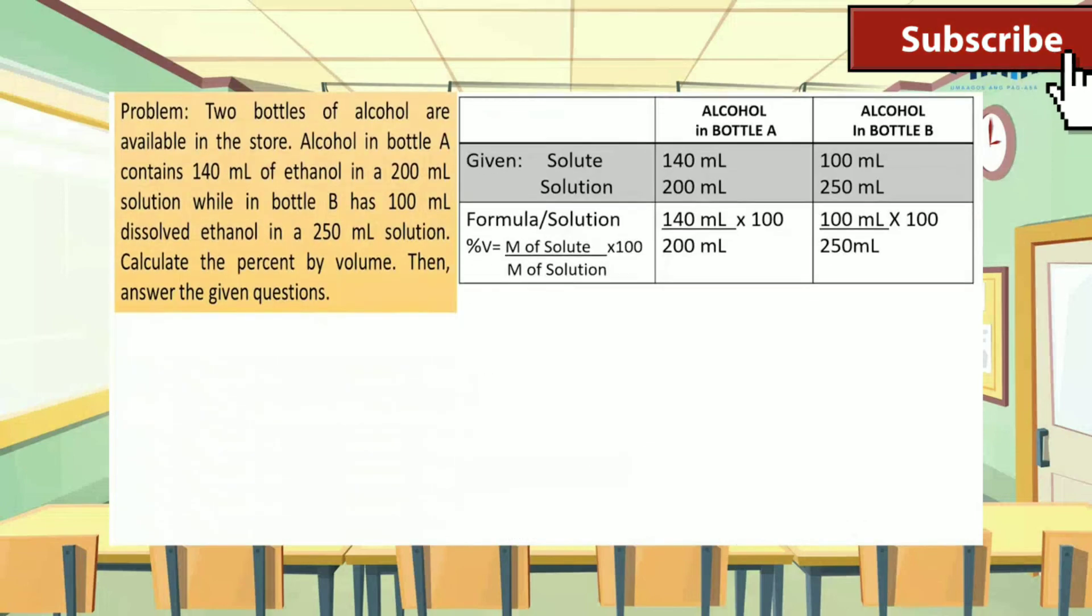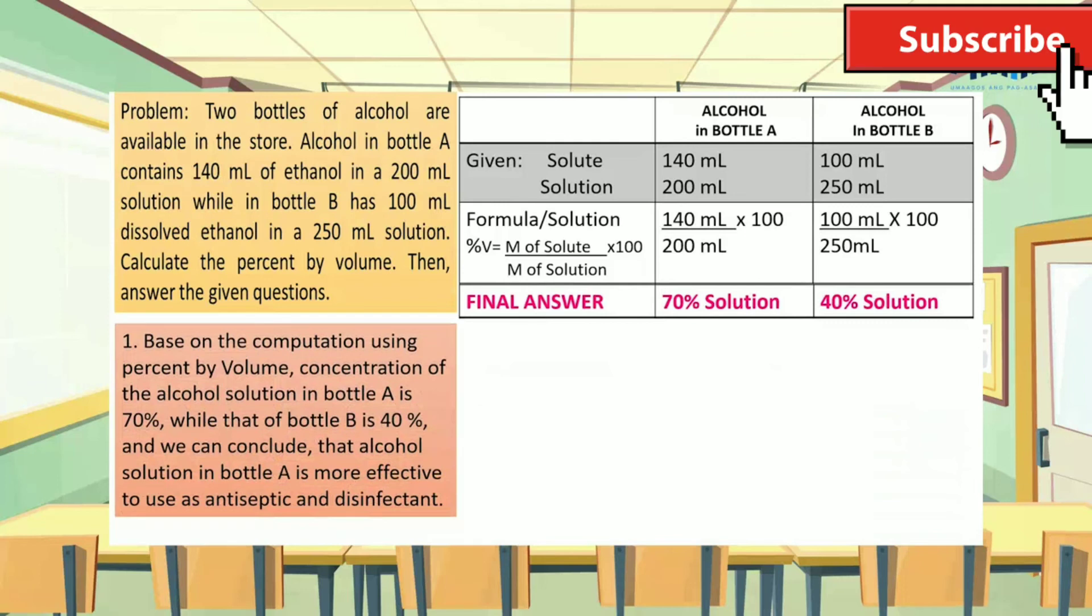Let us give attention to this problem. From the given down to its solution, it gave us this final answer. Based on the computation using percent by volume, concentration of the alcohol solution in bottle A is 70%, while that of bottle B is 40%. And we can conclude that alcohol solution in bottle A is more effective to use as antiseptic and disinfectant.